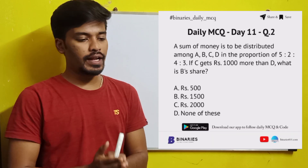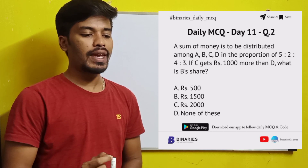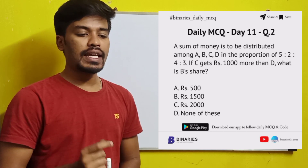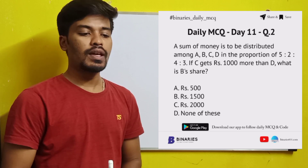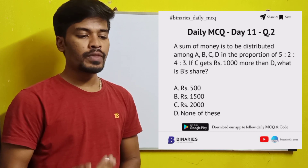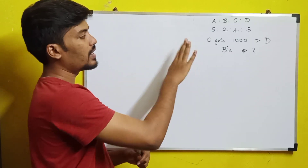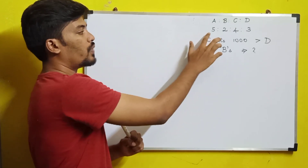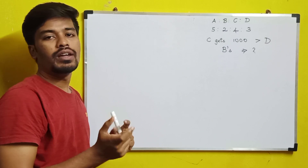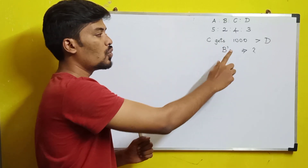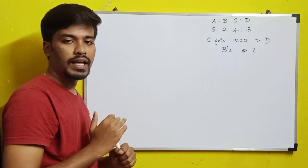The second question: a sum of money is to be distributed among A, B, C, and D in the proportion of 5:2:4:3. If C gets Rs.1000 more than D, what is B's share?